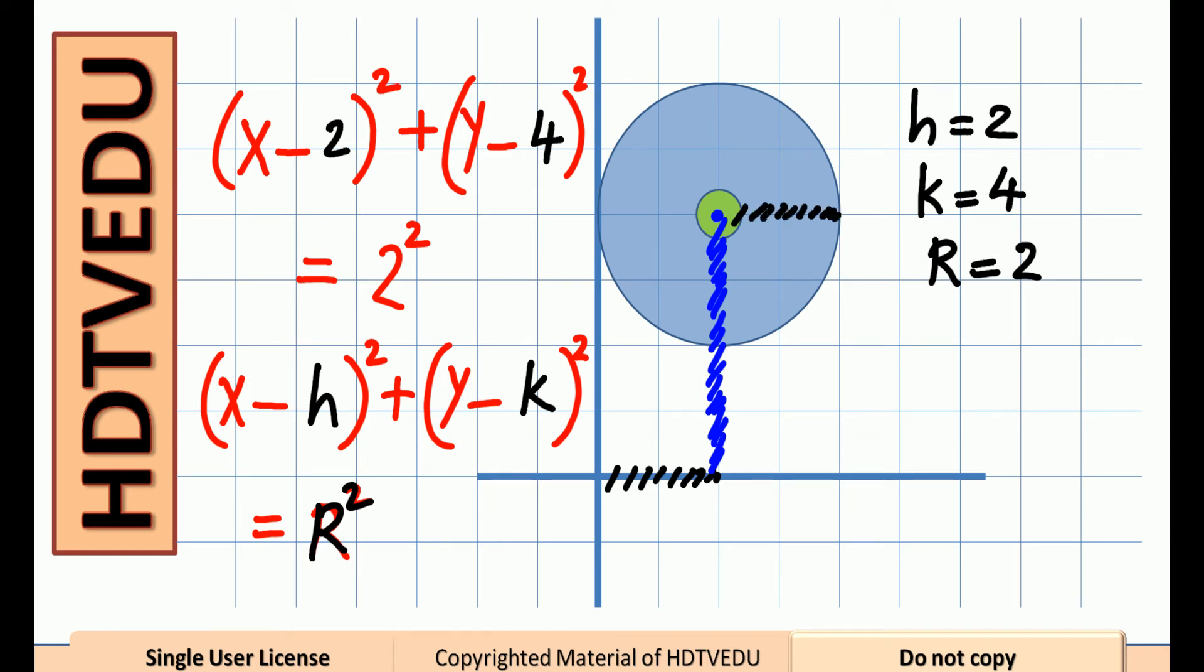1, 2. 1, 2. 1, 2. The center of our circle is at 2, 4. And the radius is 2 units.